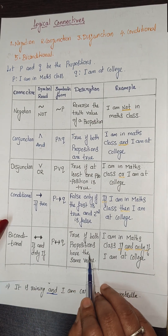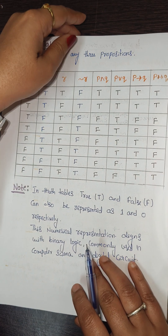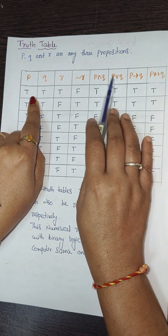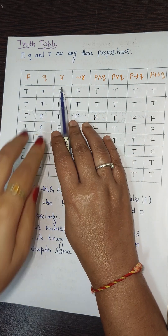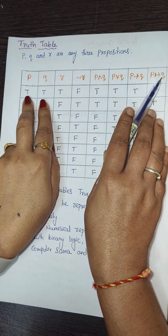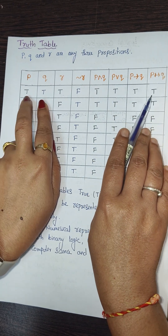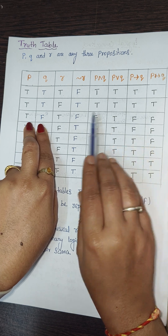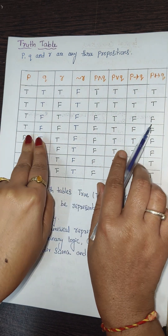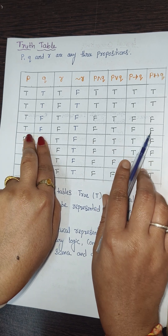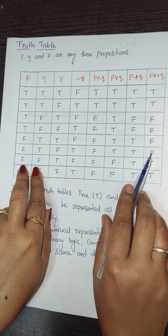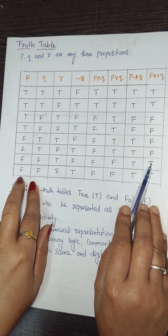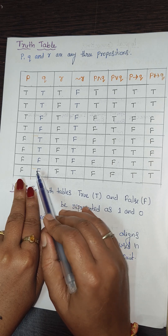For bi-conditional (p ↔ q), it is true if both propositions have the same truth value. Both T gives T; T and F gives F; F and T gives F; both F gives T.